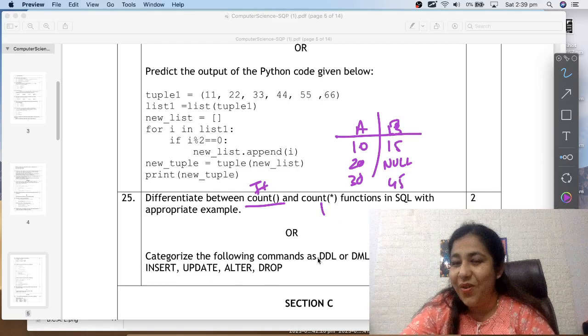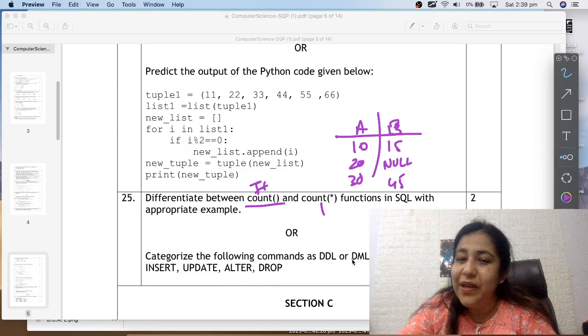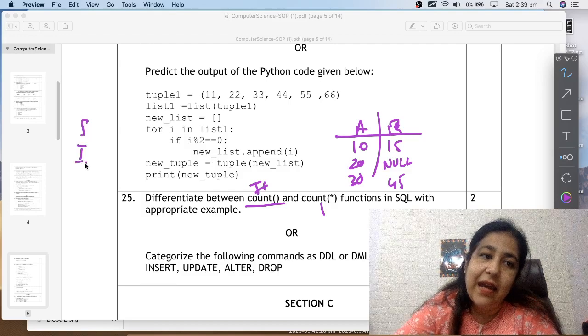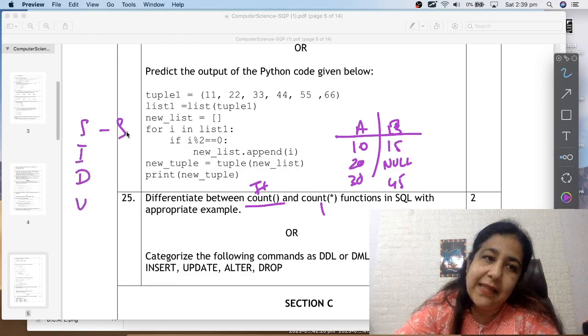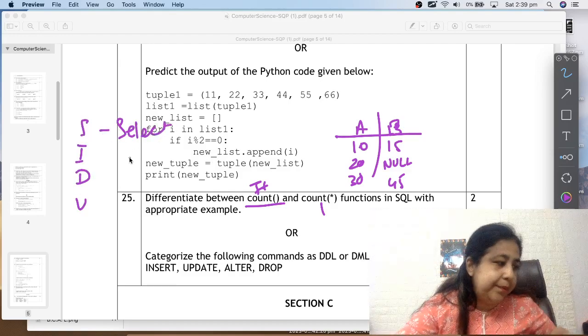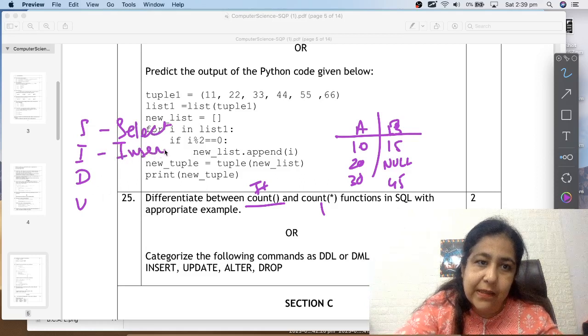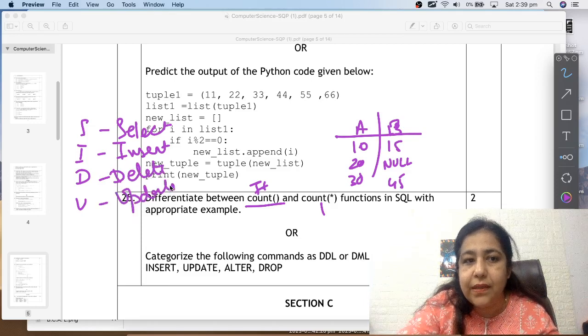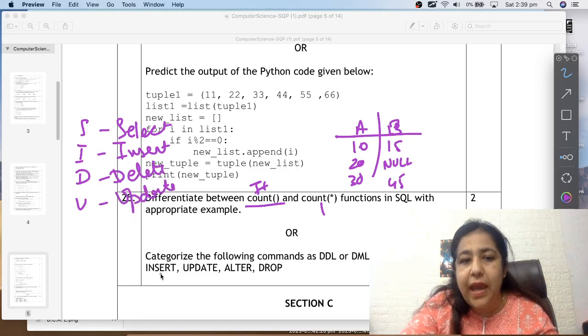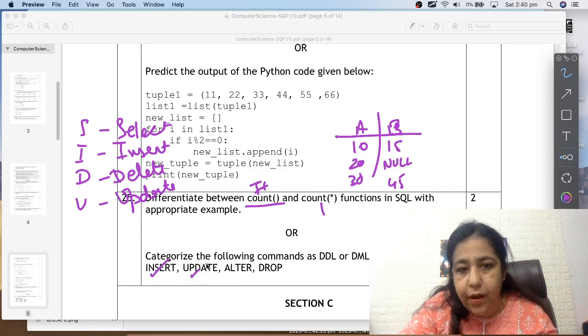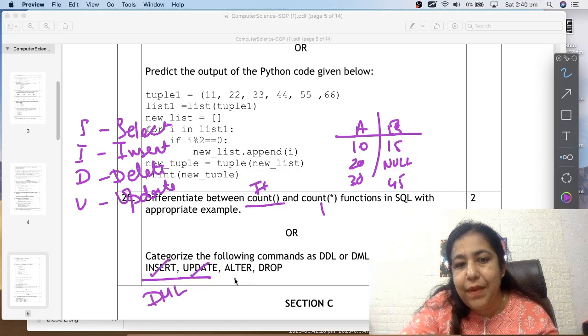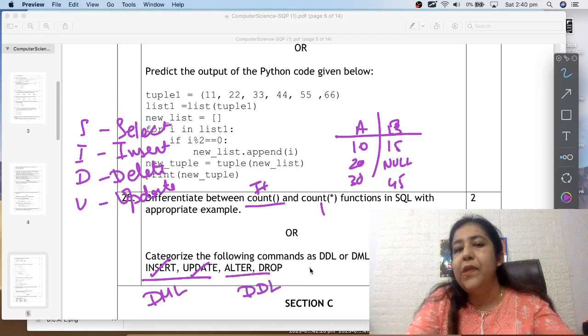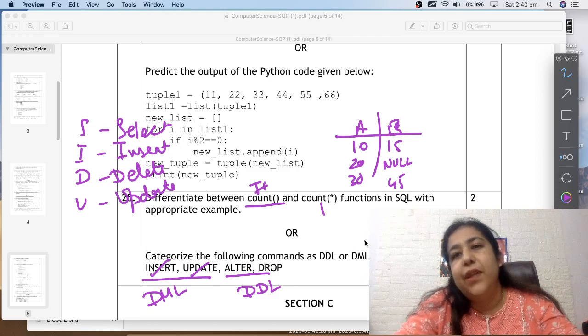Much easier is this choice question. Categorize the following commands as DDL or DML. Very simple thing you have to remember: S-I-D-U siddu. S is select, I is insert, D is delete, U is update. This is siddu. So insert and update, these two commands are our DML. And alter and drop, these two commands are our DDL. That's it. So that is how you can solve such questions. So Section B is done.